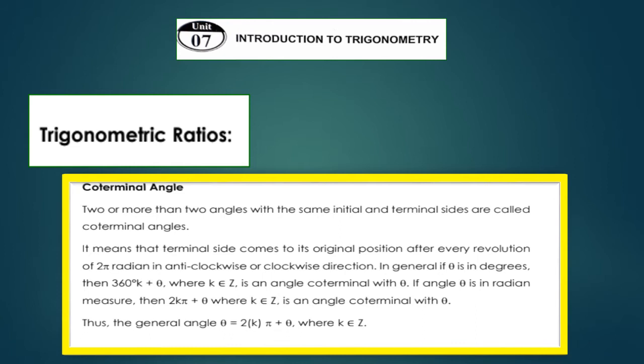Two or more than two angles with the same initial and terminal side are called co-terminal angles. This means that the terminal side comes to its original position after every revolution of 2π radians in anti-clockwise or clockwise direction.